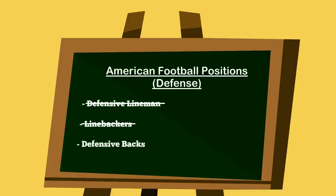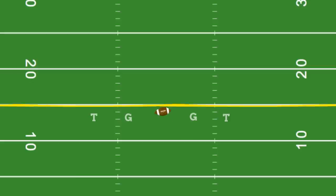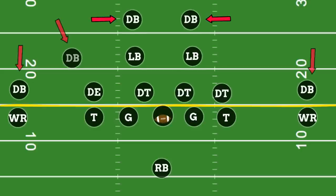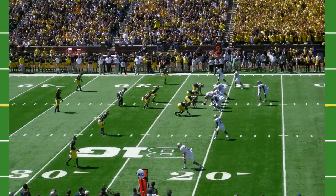Now let's cover the last position group: the defensive backs. Defensive backs are typically smaller, speedier players that are able to cover wide receivers. They are broken up into two categories — corners and safeties. In this picture, the corners are the widest defensive backs and the safeties are the deepest players on the field.